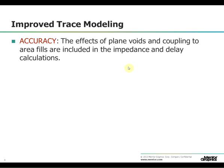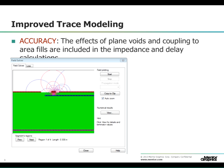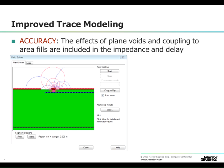The first main feature, which adds more accuracy, is the new trace modeler. It accounts for the effects of traces crossing over plane voids and coupling to area fills. The first segment shown here is surrounded by area fills on the top layer and references to the layer directly below.